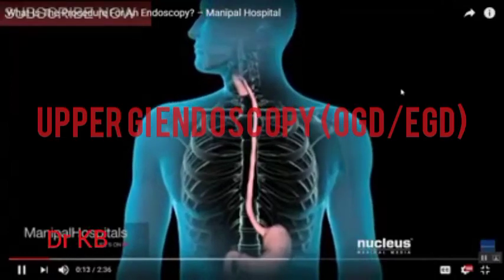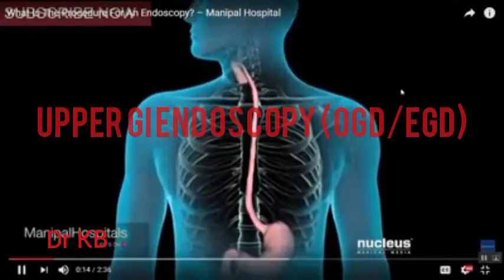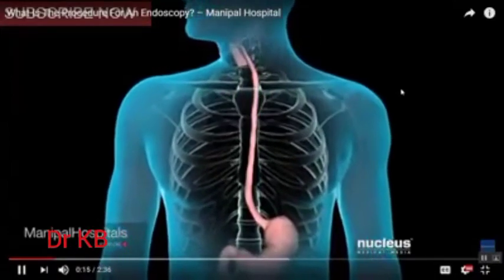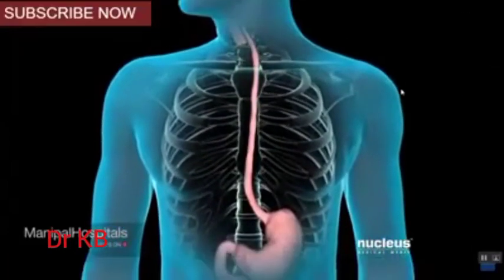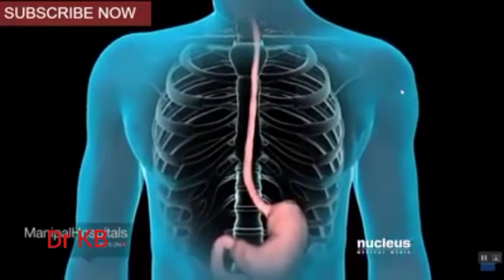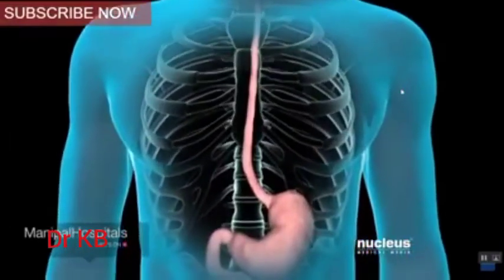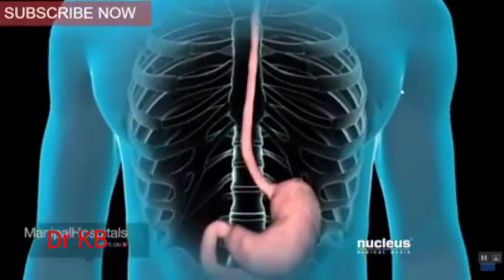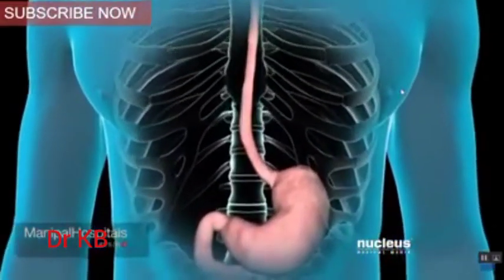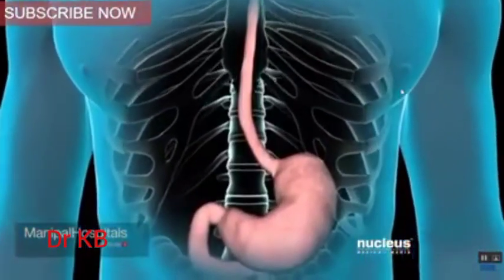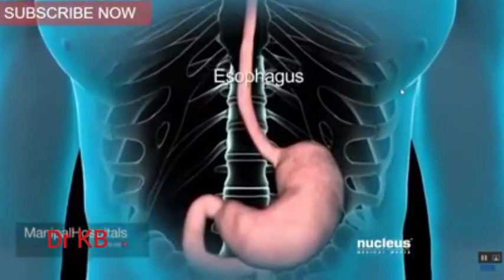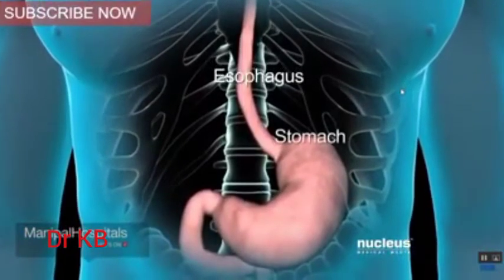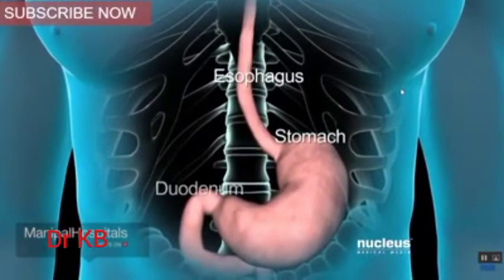Endoscopy, or EGD, is a procedure that allows your doctor to view the mucosal lining of the upper portion of your gastrointestinal tract. This includes your esophagus, stomach, and duodenum.